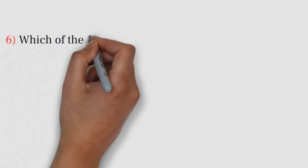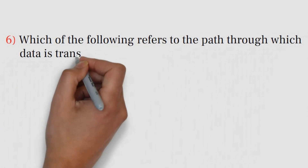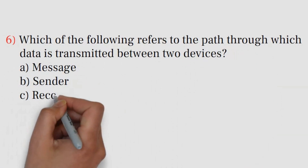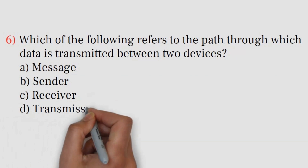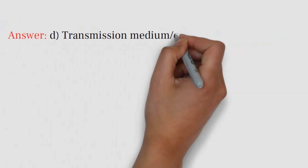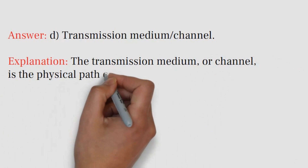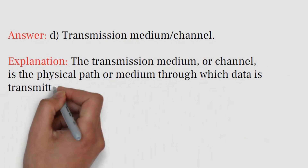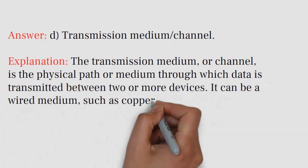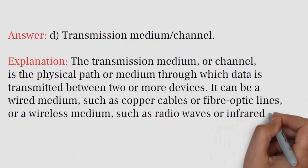Question number six: Which of the following refers to the path through which data is transmitted between two devices? A) Message, B) Sender, C) Receiver, D) Transmission Medium/Channel. Answer: D) Transmission Medium/Channel. Explanation: The transmission medium or channel is the physical path or medium through which data is transmitted between two or more devices. It can be a wired medium such as copper cables or fiber optic lines, or a wireless medium such as radio waves or infrared signals.